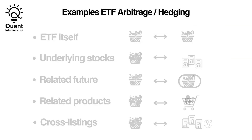The arbitrage video explored how the underlying basket of securities can be used to hedge ETF exposure, but that is just one example — there are numerous other products you can leverage. The easiest way to protect yourself against price movements in a product would be to use the same product itself. So if you're going long on an ETF, just selling it would close your position and leave you neutral with regard to price movement. This requires you to cross the spread, but in market making, for example, it happens regularly that you trade both sides of the same product and stay neutral on average.